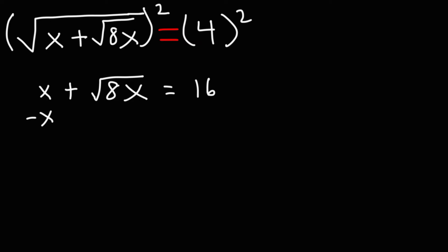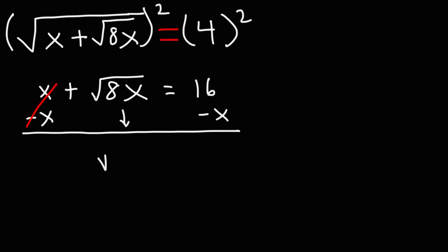Now I'm going to subtract both sides by x. I want to get the square root of 8x by itself on one side of the equation. So right now it's only on the left side. On the right side, I have 16 minus x.